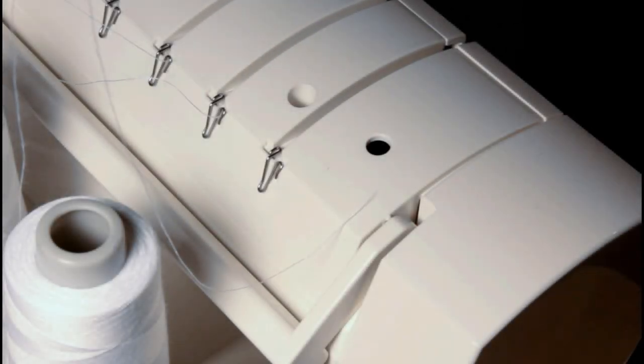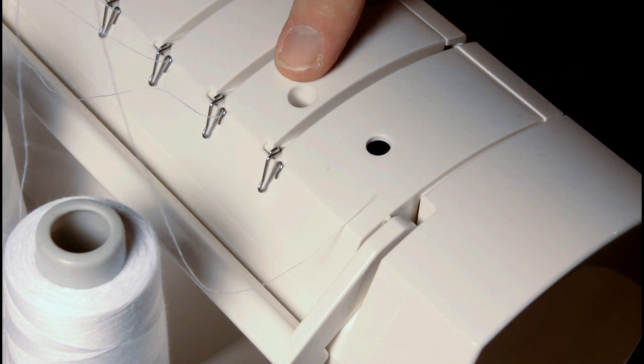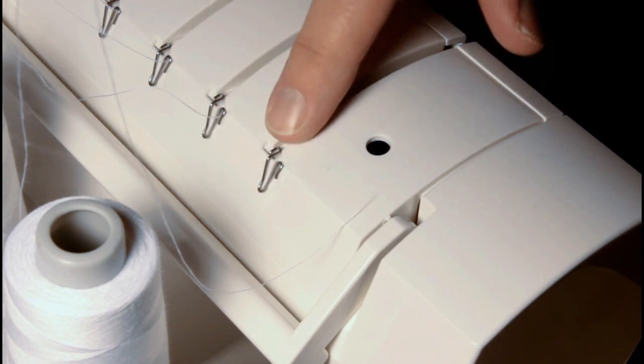Okay, I've got a new Singer Scholastic serger here, and this is the one that was just introduced by HSN. One of the things I noticed when I started setting it up, something that could be a problem, is back here where the little thread guides are coming off the post.